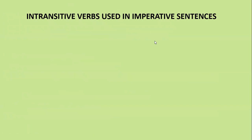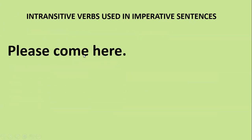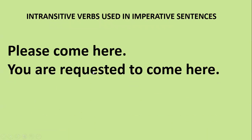For intransitive words used in imperative sentences — a sentence which doesn't have any object — for example: 'Please come here.' We don't have any object, but it is understood someone is telling someone else. Because of the word 'please', we write 'requested': 'You are requested to come here' — using the infinitive 'to' plus base form.